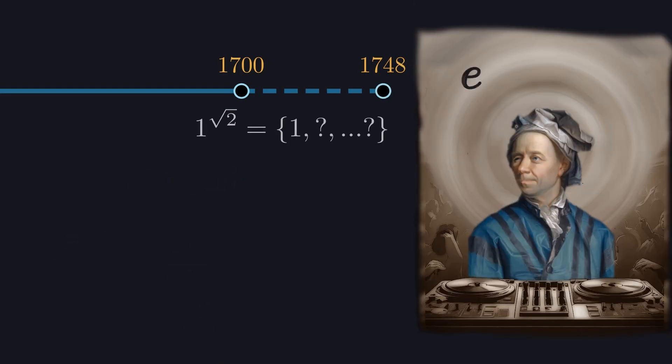Then, boom, Euler drops the beat, mixing e and i and pi with cosine and sine, bringing solutions up and up and up. Okay, I'll stop.